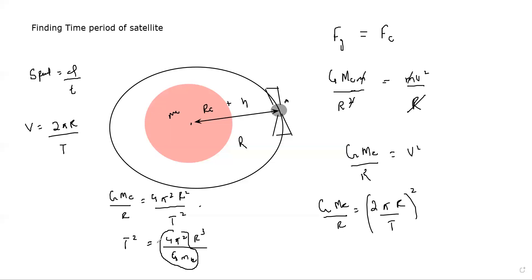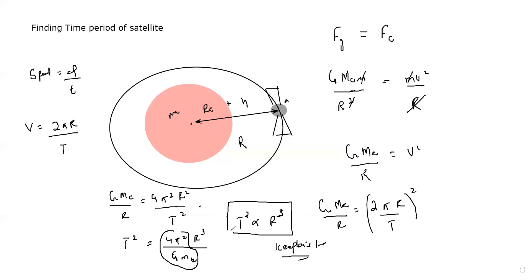When we replace the constant with a proportionality sign, we can simply say T² is proportional to r³. This is called Kepler's law, which shows a relation between the time period and the distance of the satellite from the center. If we further simplify, taking the square root of both sides, T is proportional to r raised to the power 3/2.